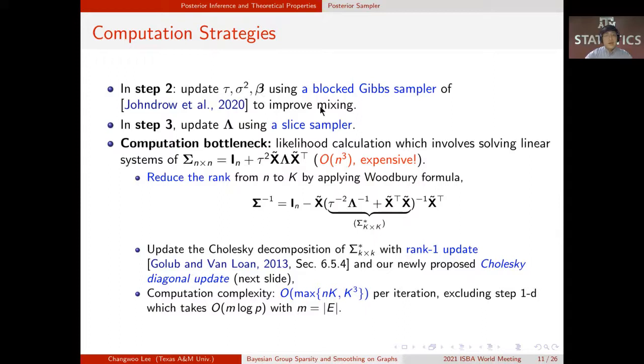Finally, in step 3, we update local shrinkage parameters lambda using a slice sampler. Here, the computational bottleneck is the likelihood calculation, which requires inverting n by n matrix sigma.